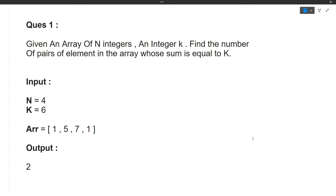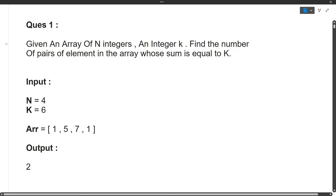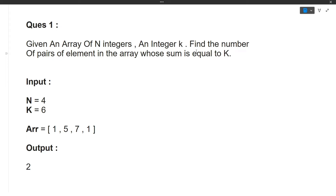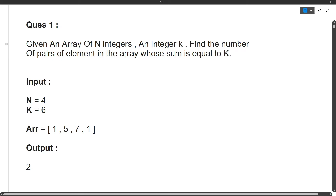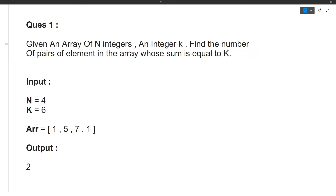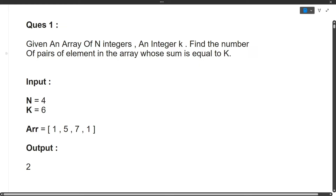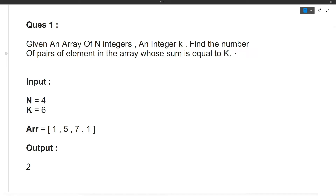The question is: given an array of N integers and an integer K, find the number of pairs of elements in the array whose sum is equivalent to K. So we are given an array containing N integers and an integer K separately. We have to find the number of pairs in the array, and if we add those pairs their sum should be equivalent to K.